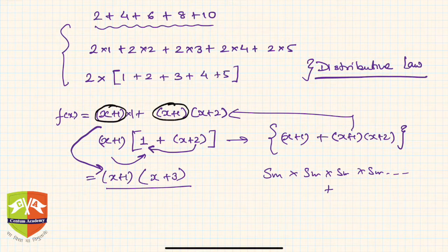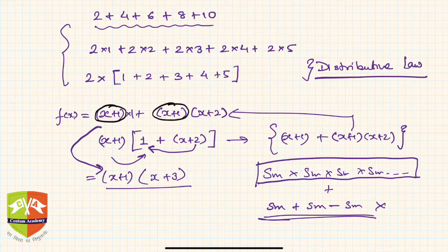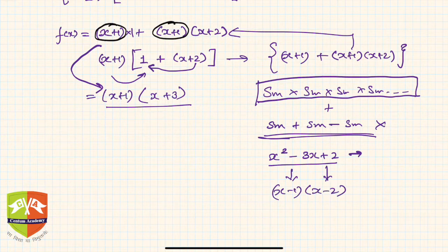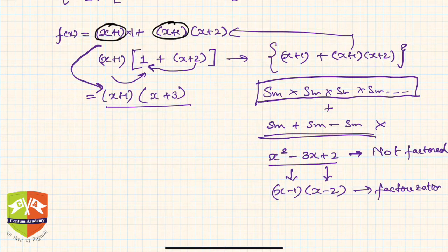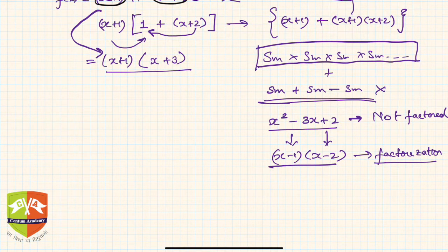In factorized form, the expression is written as something times something — there will not be any plus or minus signs at the outermost level. For example, x²-3x+2 is not factorized, but x²-3x+2 = (x-1)(x-2) is factorized. Both are the same expression, but only the second one shows the polynomial expressed as a product of its factors.